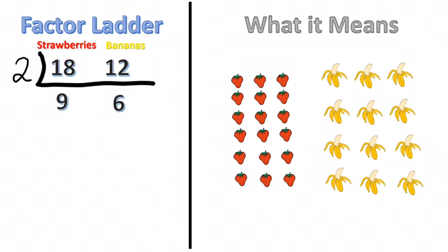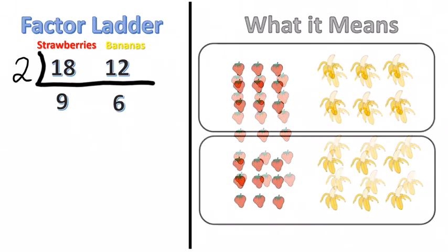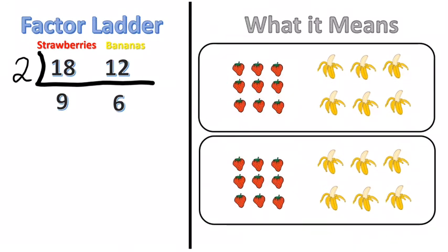These division ladders go down and then basically what I did there was I took all the fruit and I broke it into two groups and that's what it means. So that first rung of my division ladder was just me grouping the fruit into two groups and I can see 9 and 6 is how many strawberries and bananas are in those groups.